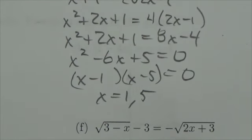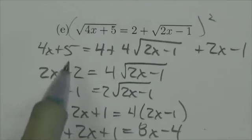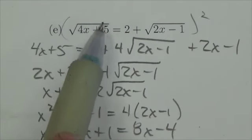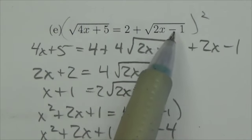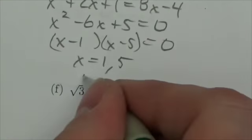And now I check those two roots. Plug the 1 in, 4 plus 5 is 9, square root of 9 is 3. 2 minus 1 is 1, square root of 1 is 1, plus 2 is 3. Okay, so 1 works.